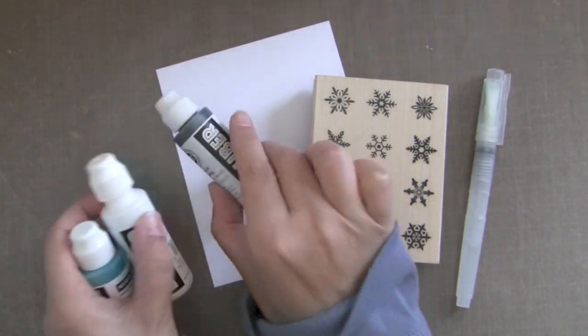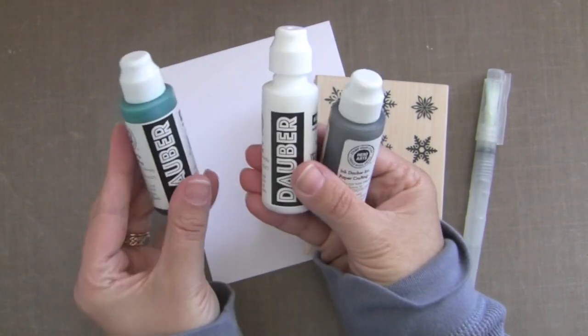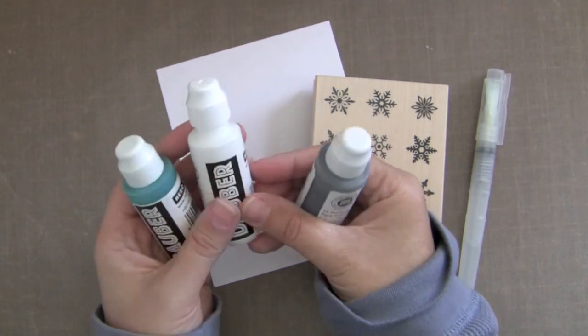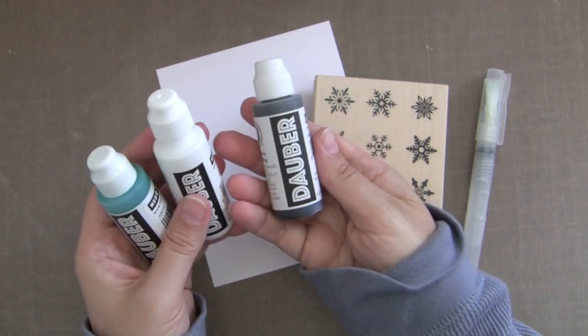So here's the daubers that we're going to be using. We're going to be using the tide pool, the white, and the wet cement.